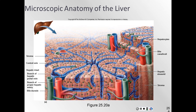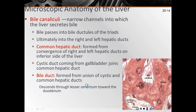The sinusoids also contain hepatic macrophages, also called Kupffer cells, which remove bacteria or debris. The liver secretes bile into narrow channels called bile canaliculi, located between back-to-back layers of hepatocytes within each plate. These small channels are where bile is secreted out from the liver.